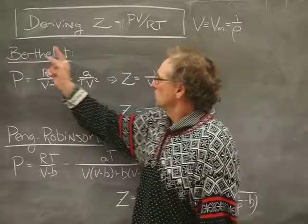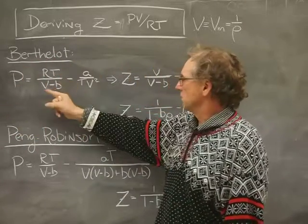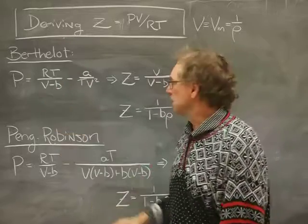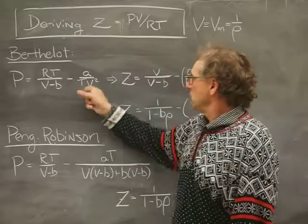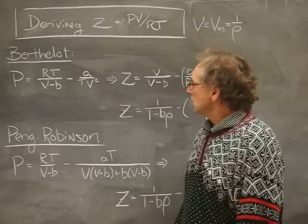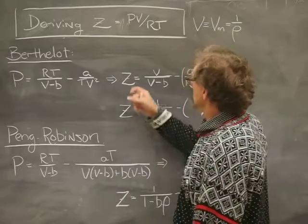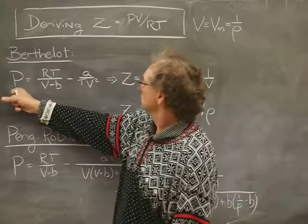The Berthelot equation of state for the pressure is P = RT/(V-b) - that's the same as Van der Waals - minus A/(TV²), which is a little different. How do we construct Z? I'm going to take that pressure, multiply by the volume,